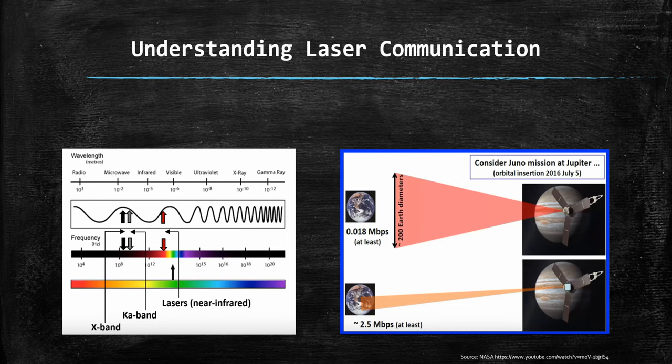The graphic showcases a theoretical application of laser comm in the context of the Juno mission to Jupiter. If laser had been employed instead of traditional RF, the beam's footprint upon reaching Earth would have been about the size of Germany, compared to about 200 Earth diameters — so significantly smaller. This tighter beam spread is due to the laser's ability to focus energy more narrowly, resulting in higher energy density at the receiver, which translates to much higher data rates. For Juno, using this technology could have meant upgrading the link from 180 kilobits per second to about 2.5 megabits per second, using the same resources in terms of power and weight.